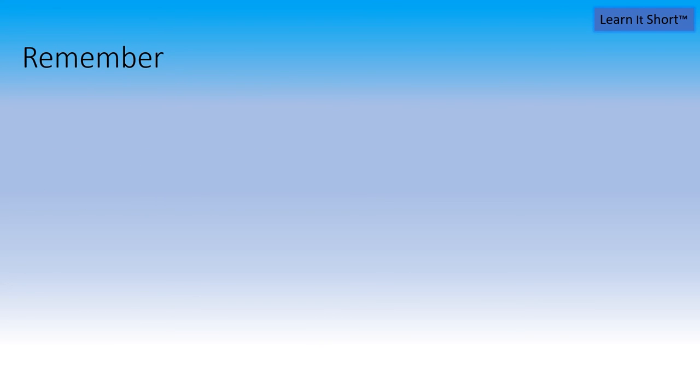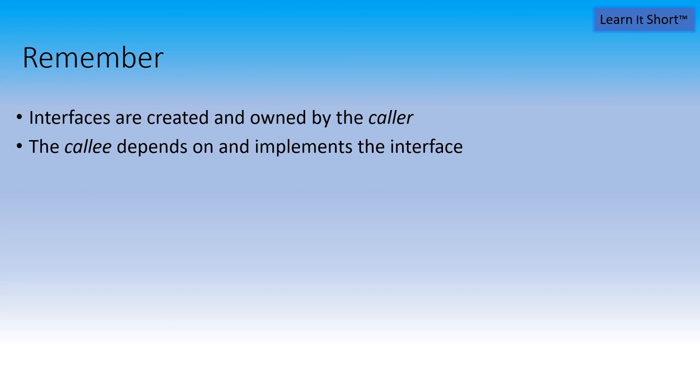So remember, interfaces are created and owned by the caller. That's a completely different motivation from inheritance where the inheritance hierarchy is typically owned by the same project team. The abstract base class is owned by the same developers that implement the concrete classes. Interfaces are created and owned by the caller. The callee depends on and implements the interface, hence the dependency inversion. We just flipped that over. We decoupled the caller by removing that dependency and making the caller dependent on a type that they defined themselves.